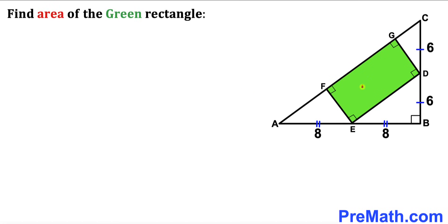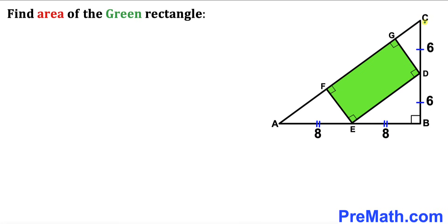In this video we have a green rectangle EDGF fully confined in a right triangle ABC as you can see in this diagram, such that segment AE is 8 units. Likewise segment EB is 8 units as well, and furthermore line segment CD is 6 units and segment BD is 6 units as well. Our task is to calculate the area of this green rectangle EDGF.